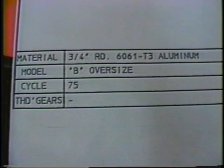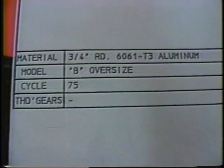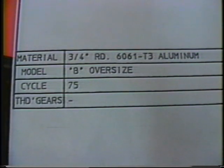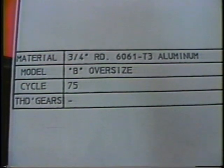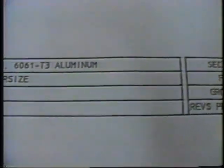If the production process requires the use of the threading clutch, the gear set will be identified numerically by the number of teeth on the driver followed by the driven gear. This will be followed by the threading method to be used. Further information on available threading methods is found in the instruction book.